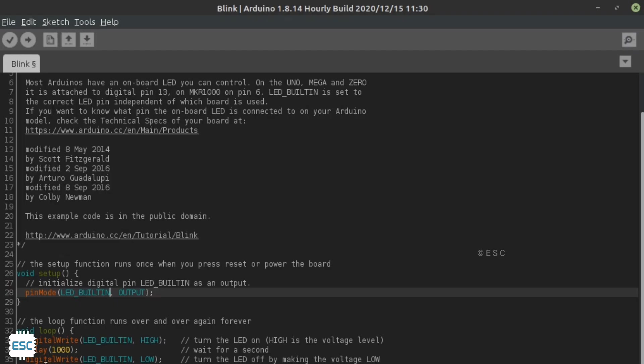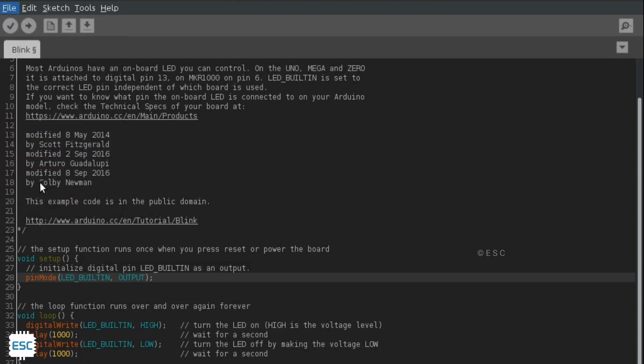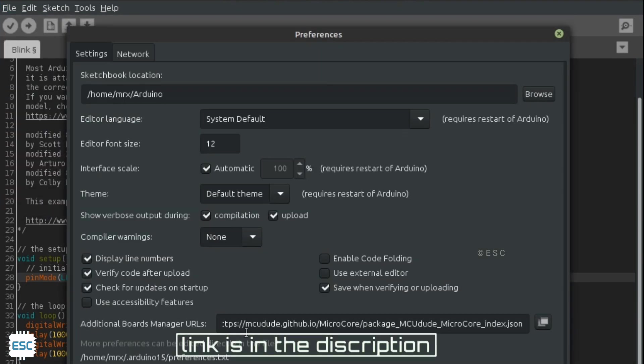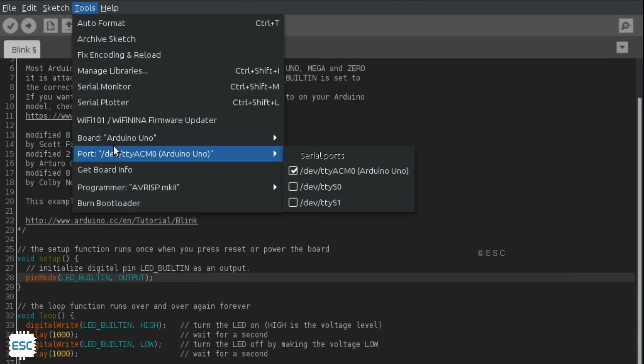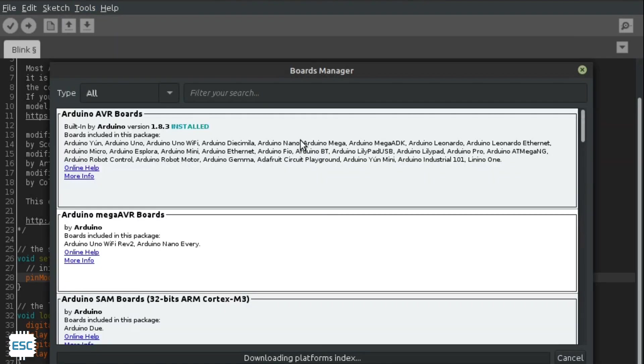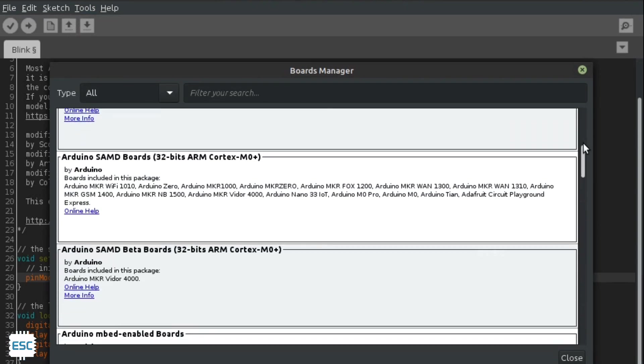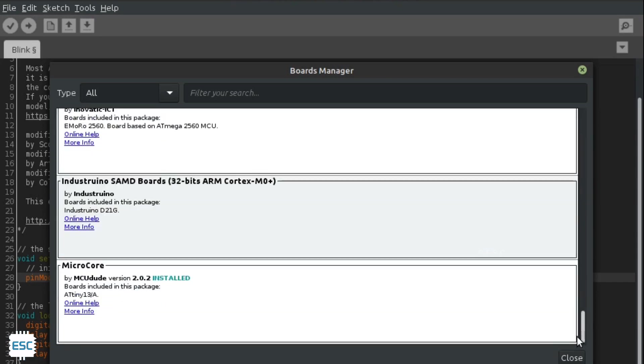Now open Arduino IDE and go to File, Preferences, and paste Microcore board URL there. Then click OK. Now go to Tools, Boards, Board Manager, scroll down to last and install Microcore.